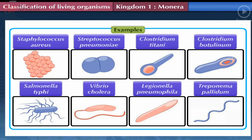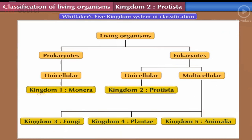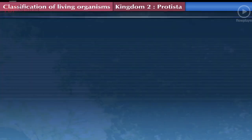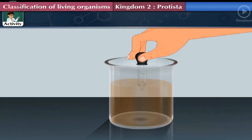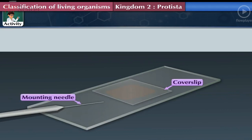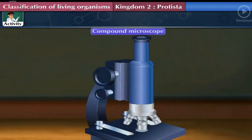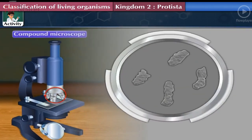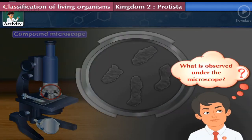Kingdom 2: Protista. Activity: Collect water from a pond and take a drop of it on a clean glass slide. Put a clean coverslip on it with the help of a mounting needle — this is a temporary mount of pond water. Observe this temporary mount first under low power and then under high power of a compound microscope. We see irregular-shaped microbes moving under the microscope.